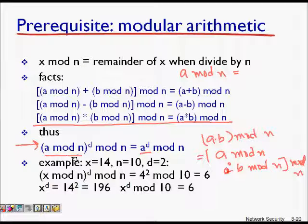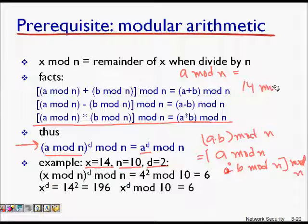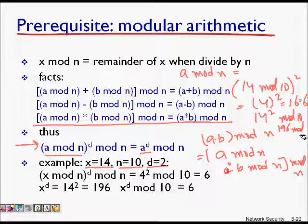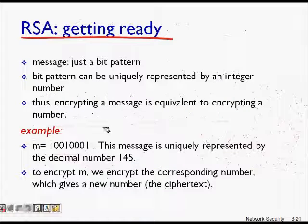For example, let x = 14, n = 10, d = 2. We compute (x mod n)^d: 14 mod 10 = 4, so 4 squared = 16. Alternatively, 14 squared = 196, and 196 mod 10 = 6. Note: 4 squared = 16, and 16 mod 10 = 6 as well — both give the same result.